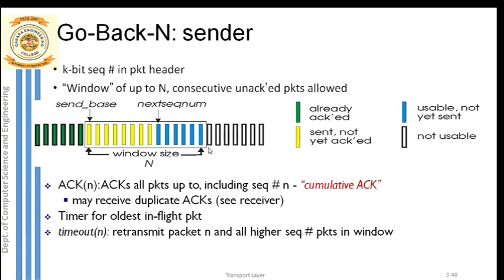From base plus n, the pointer is pointing to a packet outside the window. Base plus n means the pointer pointing to the packet that is outside the window - these packets cannot be sent because they are outside the window and have not yet arrived from the application. Base minus 1 packets are already acknowledged packets.